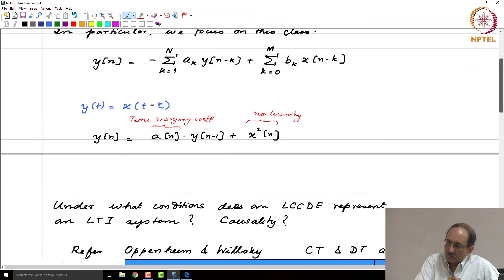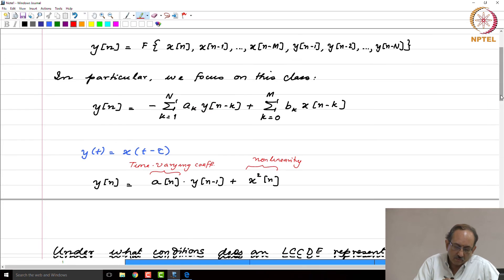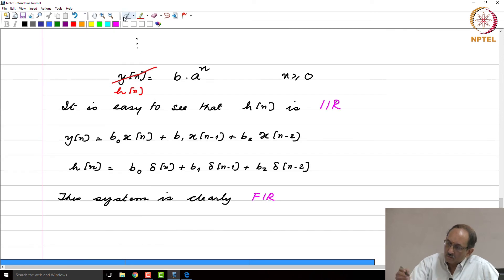If you go back and look at this general equation, you can see that if all the aₖ's are 0, then the system is FIR, very easily seen from this. That is, if all the aₖ's are 0, this implies system is FIR.